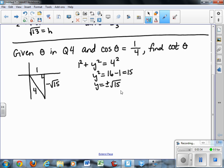Now I want to find cotangent of theta. Cotangent of theta is adjacent over opposite. So cotangent of theta is 1 over -√15, or -√15 over 15. So those are the two other types of problems that I want you to know how to do for this unit.